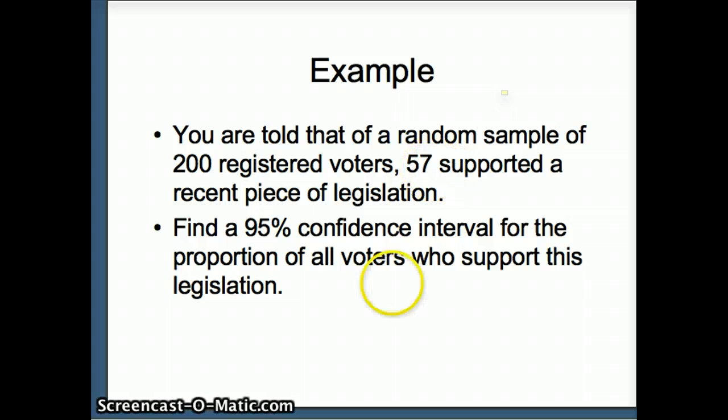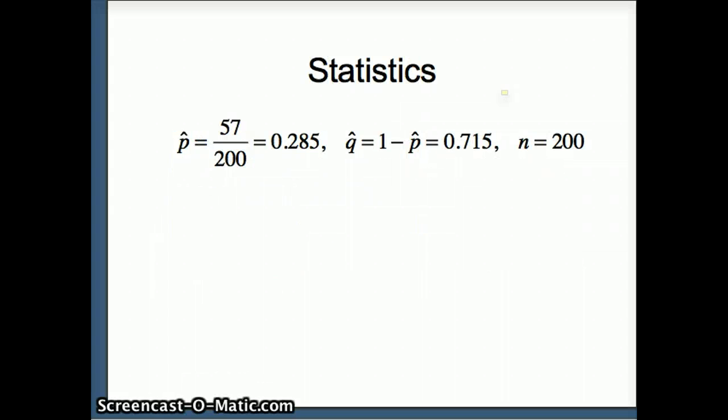So we have a random sample of 200; we want to generalize from the 200 to the entire population. So here are our statistics: p-hat 57 over 200 which is 0.285, q-hat simply 1 minus p-hat 0.715, and n is 200.